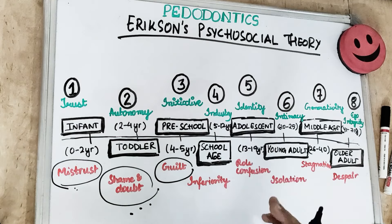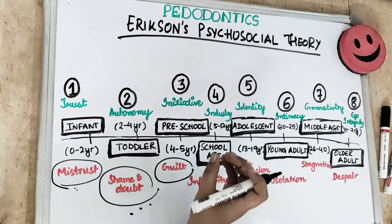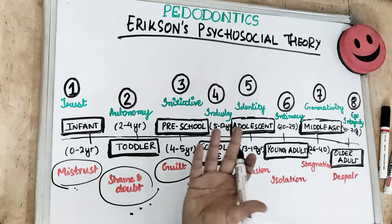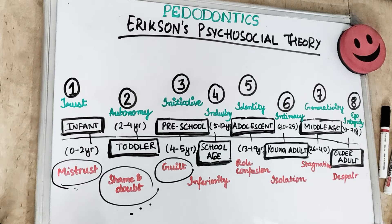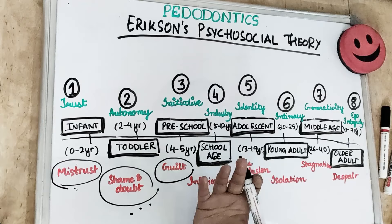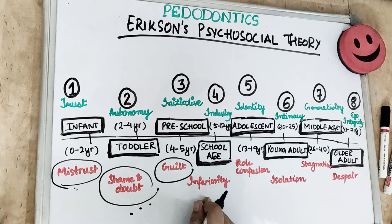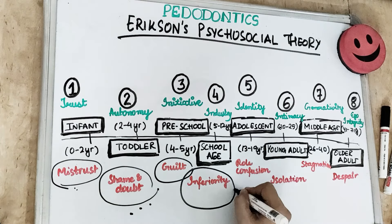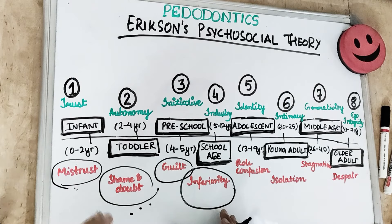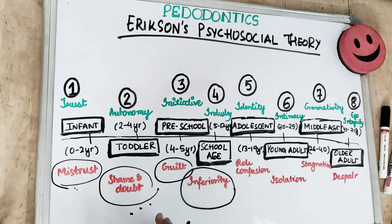The fourth stage is industry versus inferiority, seen in school children aged 5 to 12 years. School children are into studies, arts, or sports; they love doing things they enjoy and try to learn social ethics and cultural skills. If a child is doubted or mistrusted at this stage, the shame and guilt carried from the preschool stage makes the child feel defeated and builds an inferiority complex. If cooperation is developed and the child understands the need for treatment, with peer group support, positive reinforcement can be used effectively during dental treatment.